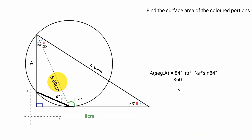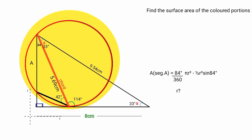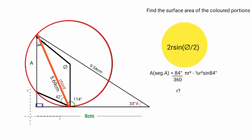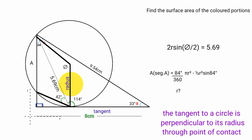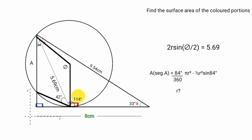This line here is a chord of the circle, and the formula for the length of a chord is 2r sine(theta/2), so 2r sine(theta/2) equals 5.69. Theta is the angle subtending to the center. This is a tangent and this is a radius — the angle a tangent makes with the radius is 90 degrees. This whole angle here is 114 degrees, so this must be 114 minus 90 equals 24 degrees.